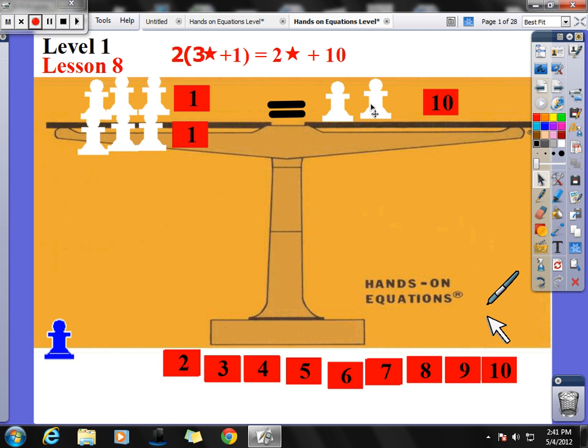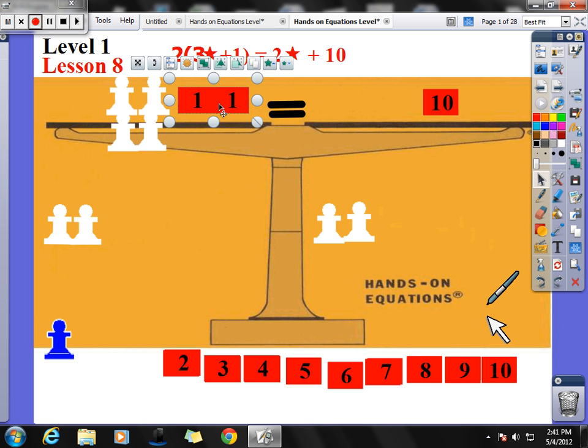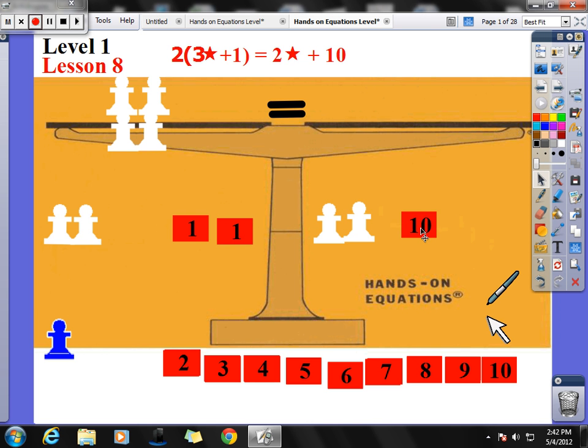So I have over here 2 stars. I have over here 6 stars. I could take away 2 stars from both sides of my equation. And I could do that because I can. And now I have 2 ones, which equal the number 2. So I bring those down. And I subtract 2 from 10. 10 minus 2 is 8.